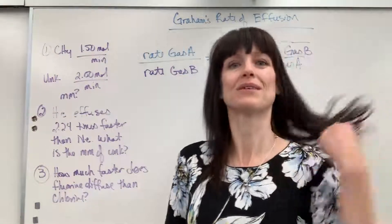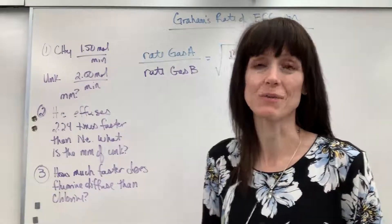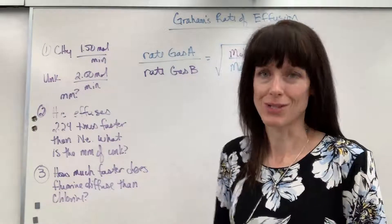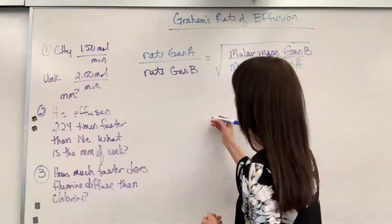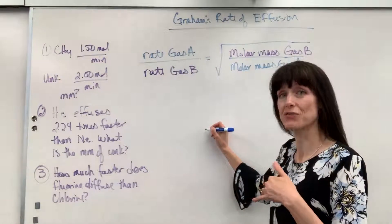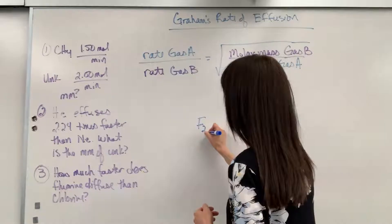Now, be careful on this. Both fluorine and chlorine are diatomic elements. So, when we do molar mass, we're multiplying it by 2. So, we're going to have, I just want to know how much faster fluorine diffuses. So, let's put fluorine in the numerator.